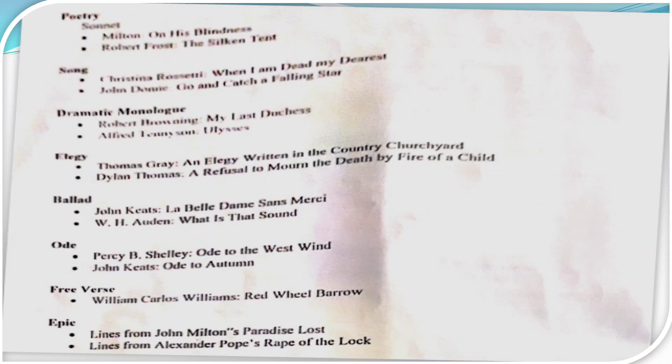After that we come to the song. The first writer is Christina Rossetti and her poem is 'When I Am Dead, My Dearest.' After that, John Donne's poem or song 'Go and Catch a Falling Star' is included. Then comes the dramatic monologue — monologue means one person is speaking and only that speaker's voice is heard, while the listener sits silently. We will read Robert Browning's 'My Last Duchess' and Alfred Tennyson's 'Ulysses.'